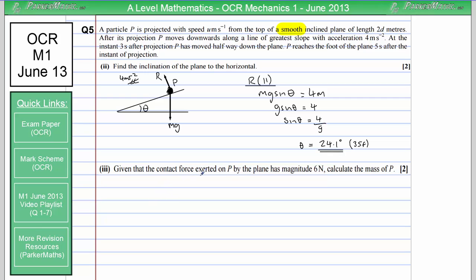Given that the contact force exerted on P by the plane has a magnitude of 6 newtons calculate the mass of P. Well the contact force is the resultant of any friction and the normal contact force acting on the particle. So because we've got no friction the contact force in this case is just the normal contact force. So if we want to find the mass of P and we know the value for R up here is 6 all we're going to do is resolve perpendicular to the slope.